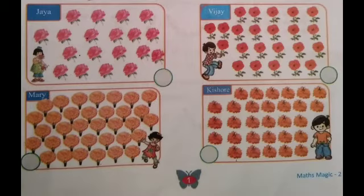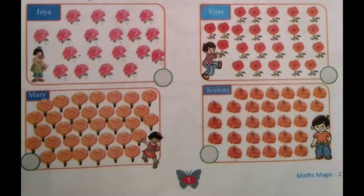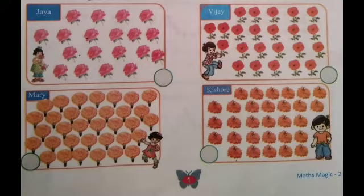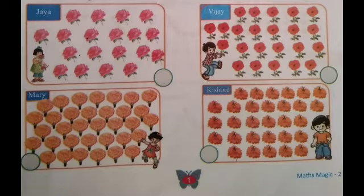Children, see the names here. Tell the names: Jaya, Vijay, Mary and Kishore. Look at this. Jaya count the rose flowers. Vijay count the hibiscus flowers. Mary count the marigold flowers and Kishore count the dahlia flowers.